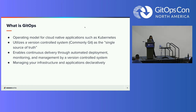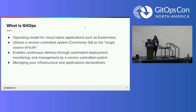GitOps utilizes a version controlled system, most commonly Git, as the single source of truth, and it enables continuous delivery through automated deployment, monitoring and management by a version controlled system. With GitOps, you manage your infrastructure and applications declaratively.